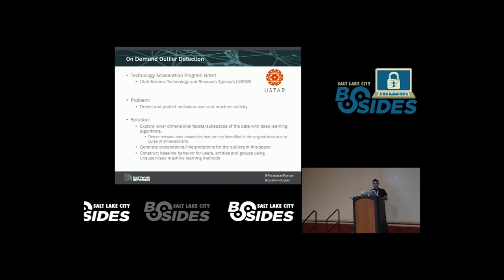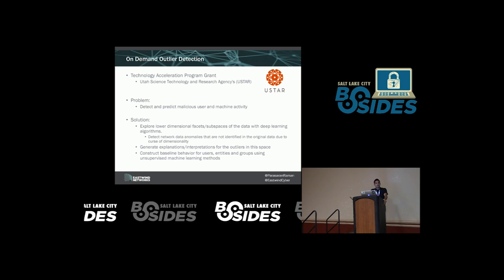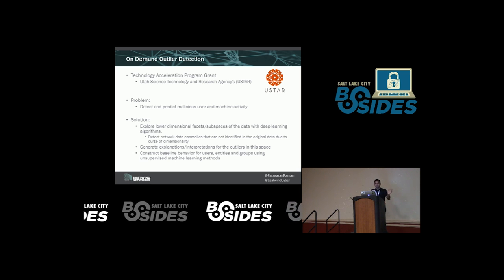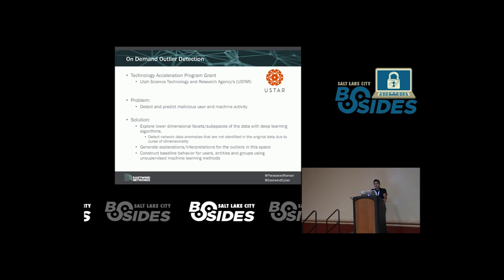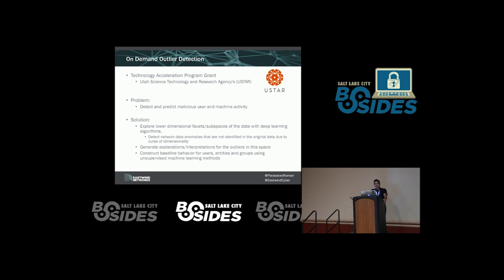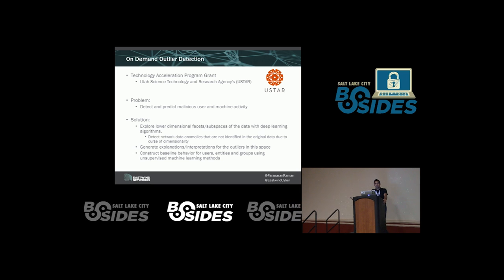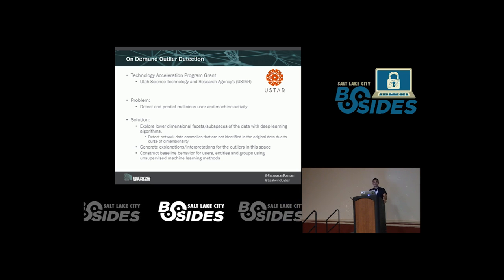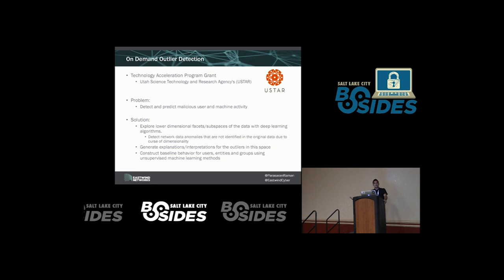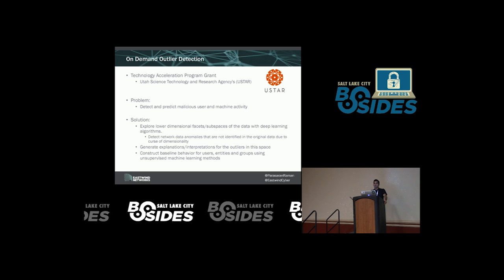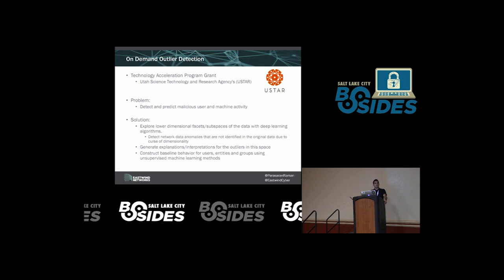The topic for today is on-demand outlier detection. People talk about outlier detection in the field of security every day. What we want to do here is to see what machine learning can provide towards picking out points that are anomalous, that are different, that are deviant in your network.